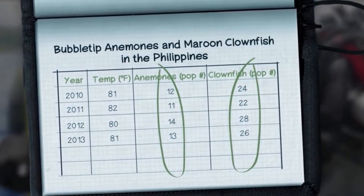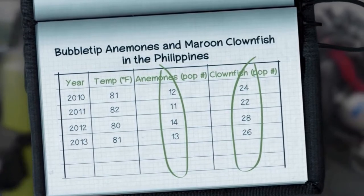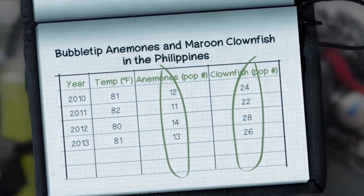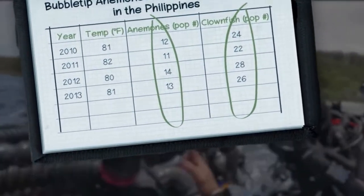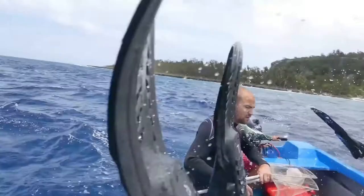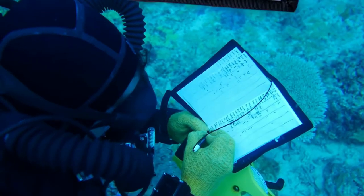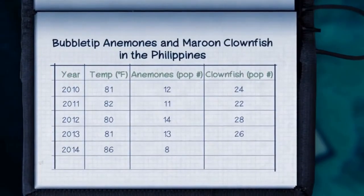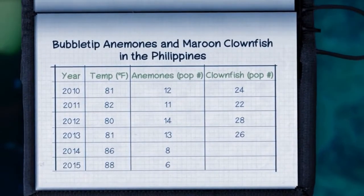Understanding this relationship allows us to make predictions about the population of maroon clownfish based on what we know about the population of bubble-tip anemones. Now imagine you travel back to the same reef to continue your research. What trends do you notice over the following 2 years?